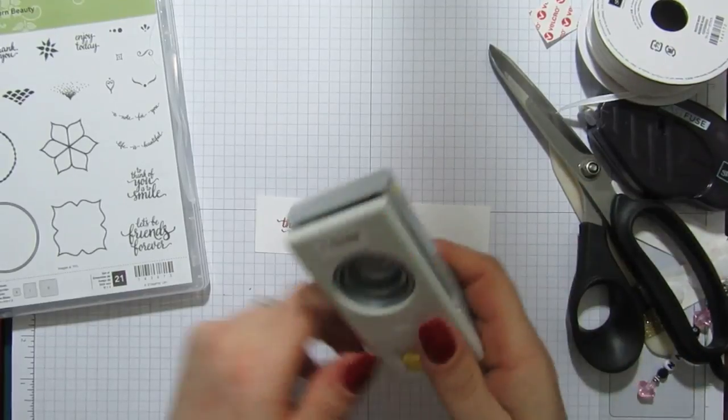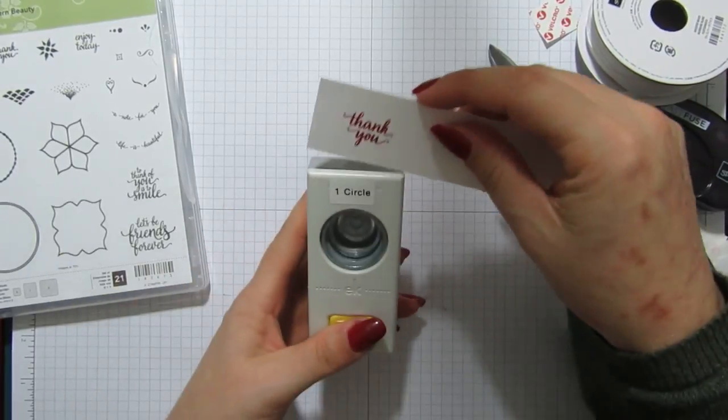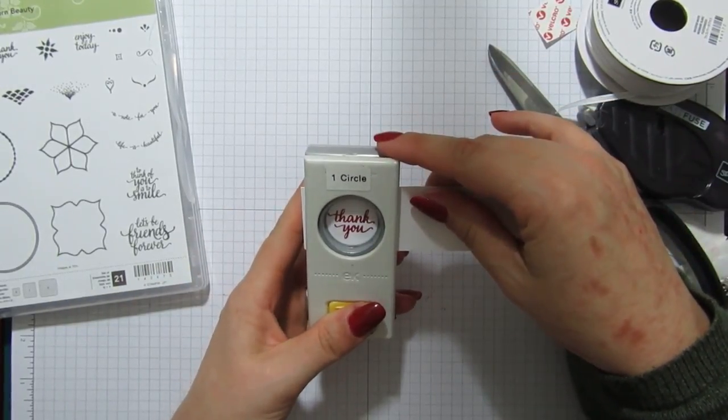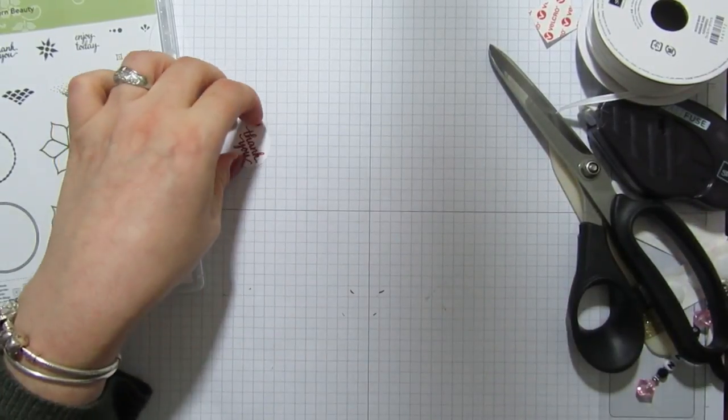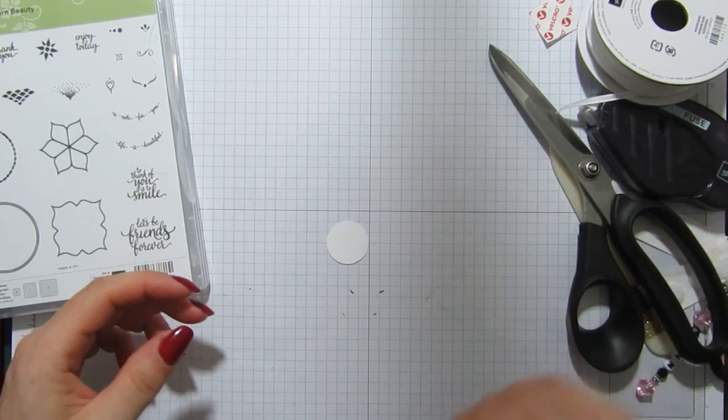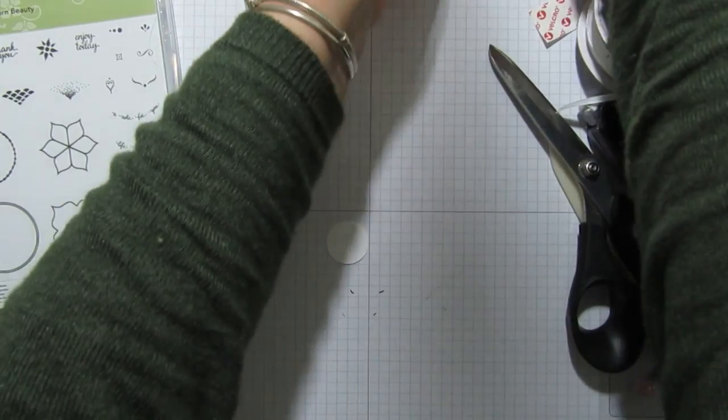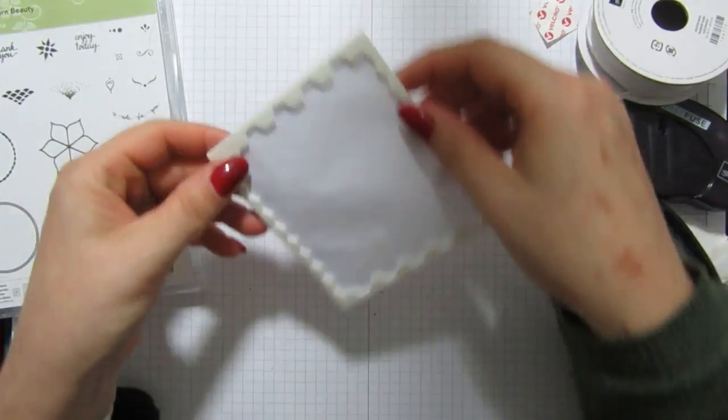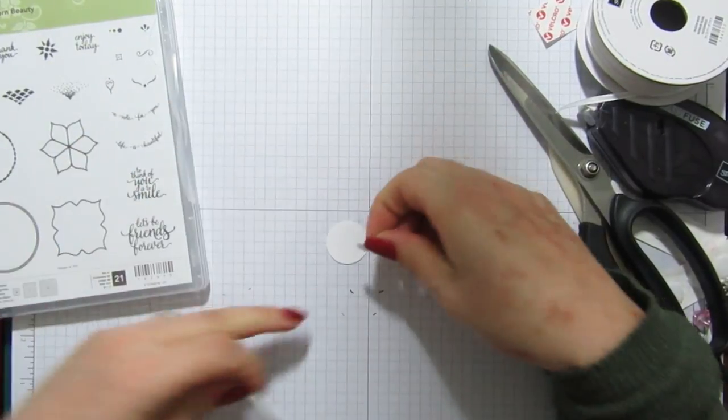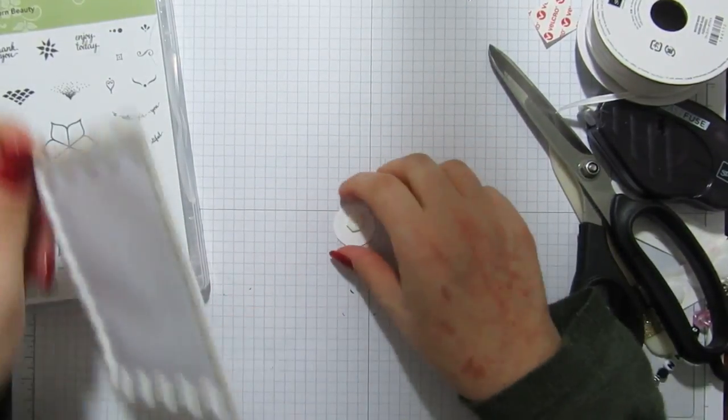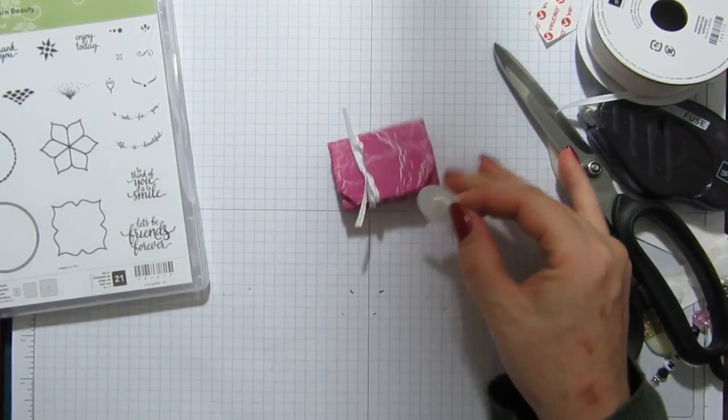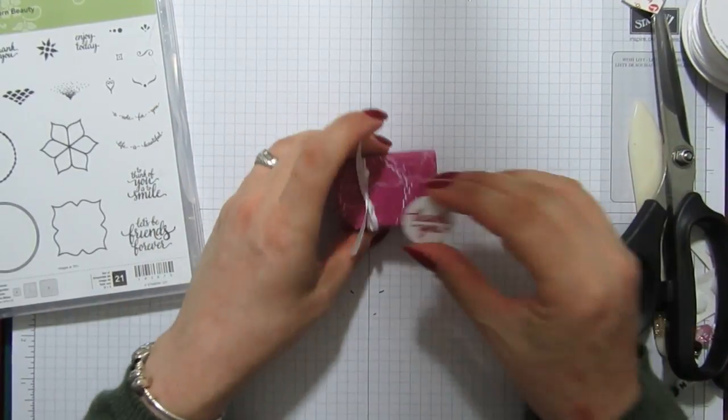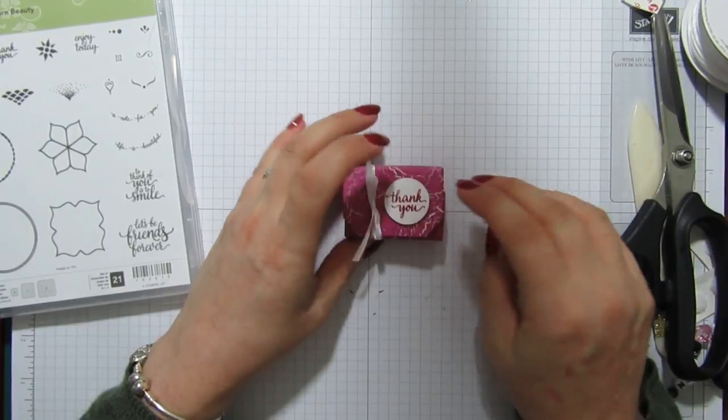And then I've got a one inch circle punch. I'm just going to punch it out, put a little dimensional on the back, just one in the middle. Get the little box and then I'm going to stick that just there.